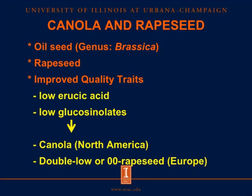Canola and rapeseed are oilseeds in the genus Brassica. Rapeseed has been developed by plant breeders to obtain low erucic acid in oil and low glucosinolates in meal. They then changed the name from rapeseed to canola, especially in North America, and they may call it double or double-zero rapeseed in Europe.